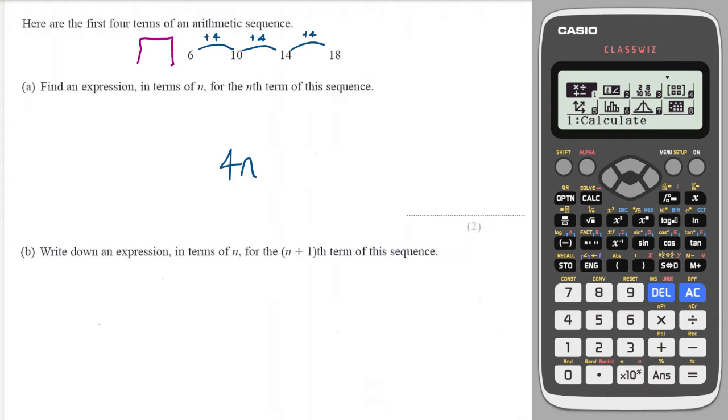What I like to do is imagine what would go here if there was a number one back from the first term. Going backwards in the sequence, I'd have to take away four from six and that number in there would be two. So the answer to the nth term is 4n plus that number there, which is two.